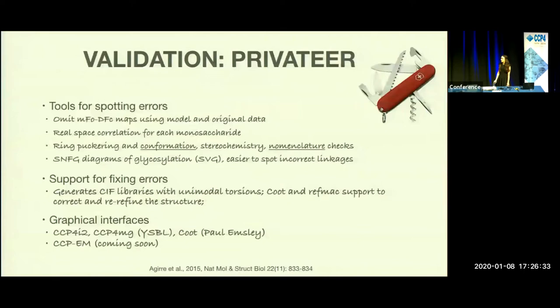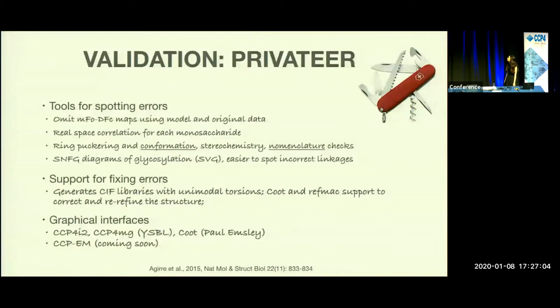Now I'm going to tell you more about Privateer, which is software for sugar validation. It has several tools for spotting errors: it generates mFo-DFc density maps, calculates real-space correlation coefficients for each monosaccharide, and has ring puckering conformation, stereochemistry, and nomenclature checks. It generates SVG diagrams for glycosylation, which makes spotting linkage errors easier. It also generates restraint libraries with unimodal torsions, which can be used in COOT and REFMAC to correct and re-refine a structure. It's currently integrated in CCP4I2, CCP4MG, and COOT, and soon it will be coming to CCPEM as well.